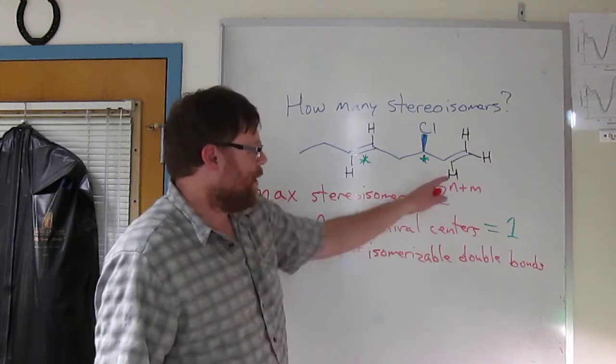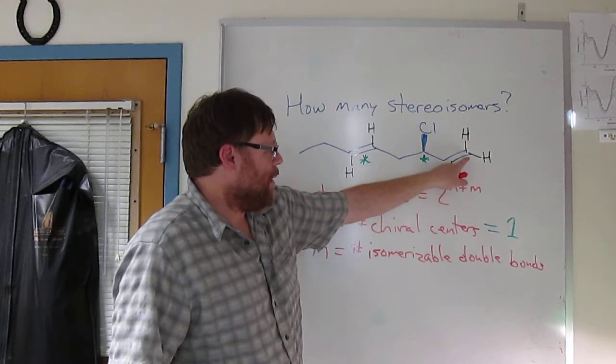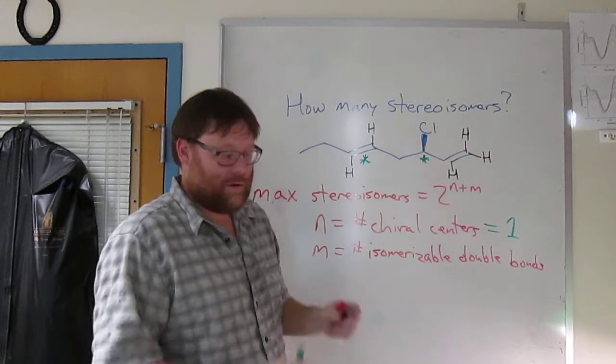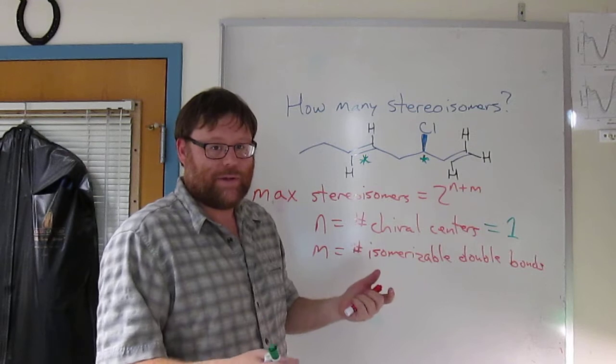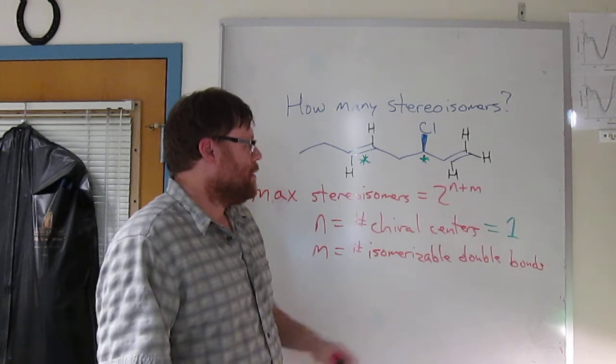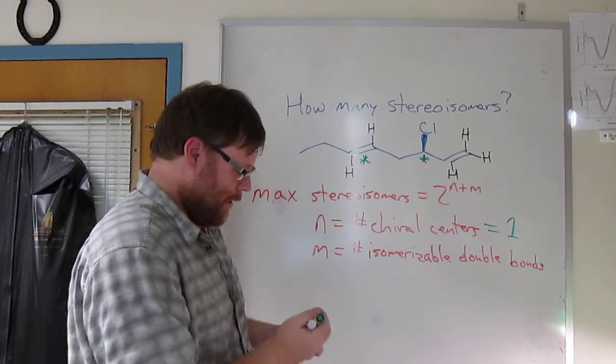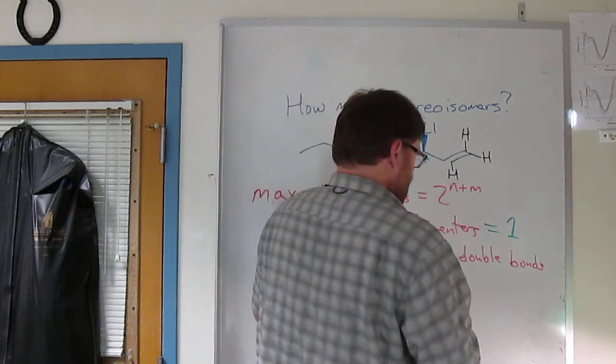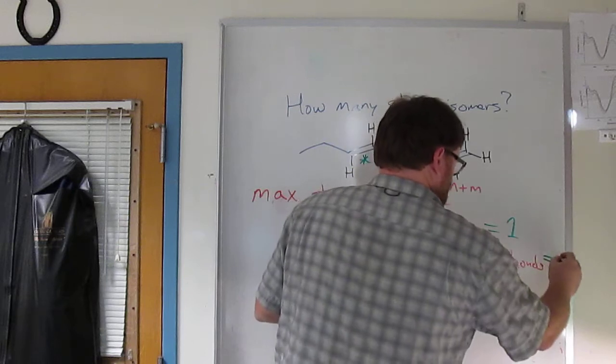And so a non-isomerizable pi bond will be a pi bond that's got one carbon that's got two identical groups on it. There's no way to get a cis or trans relationship by breaking them. So this is not an isomerizable double bond. Okay, so M in this case turns out to be one as well.